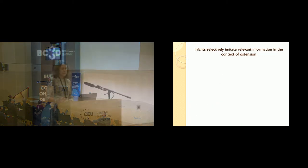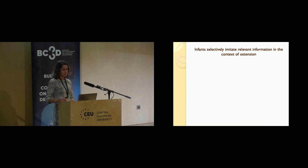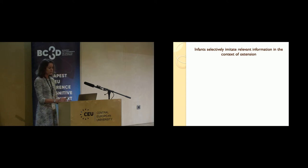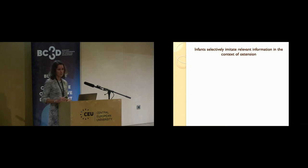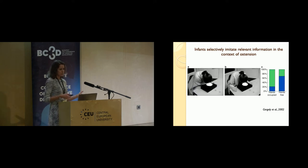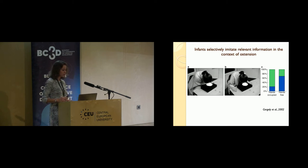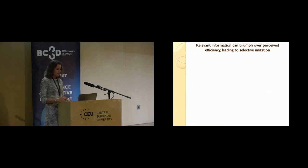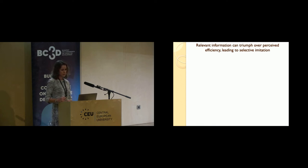There is evidence from infant studies that when they receive information in the context of ostensive cues, they tend to attribute relevance to that information. Studies showing this typically use imitation as a measure: infants selectively imitate what they consider more relevant as opposed to what they consider less relevant. For example, in the famous head-touch study, infants only copied the unusual action of the model if they had no rational reason why the model didn't use their hands—which would have been the more efficient action. In other words, infants selectively copied the action they thought to be relevant. Furthermore, this attributed relevance can even override the perceived efficiency of the novel action.